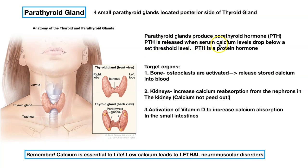PTH is released when serum calcium levels drop below a set threshold the body needs. We need calcium for multiple processes in the body — if you've taken physiology, it's all about the calcium ion. We need to keep our calcium levels at the proper level. So if calcium is low, where does PTH act? What are the target organs? Number one — where do we store calcium? In bone.